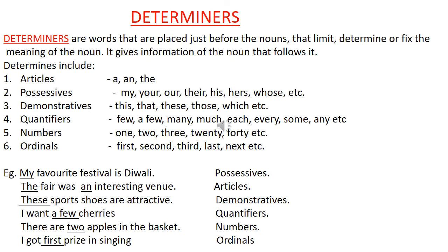After articles, let's see determiners. Determiners are words placed just before nouns that limit, determine, or fix the meaning of the noun. They give information about the noun that follows. Determiners include: articles — a, an, the; and possessives — my, your, our, her, their, his, hers, whose, etc.